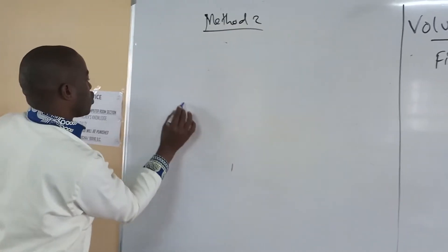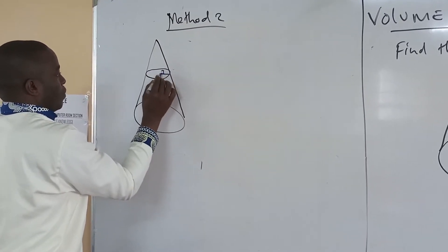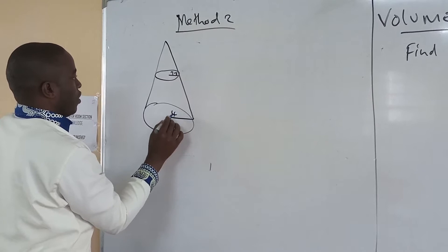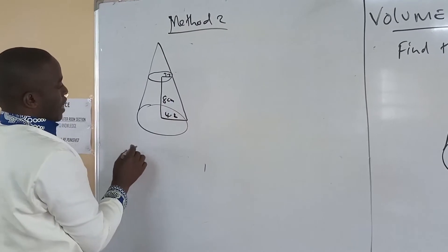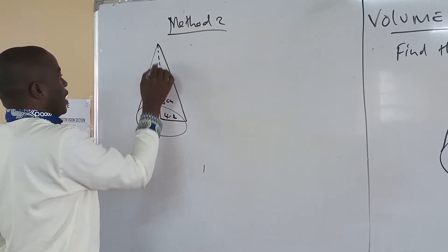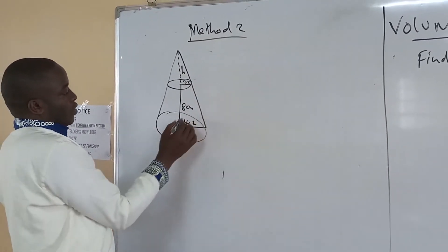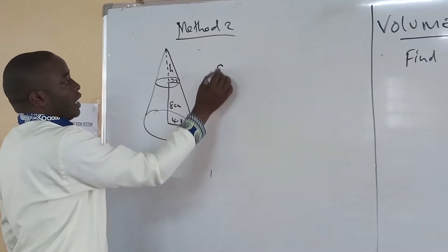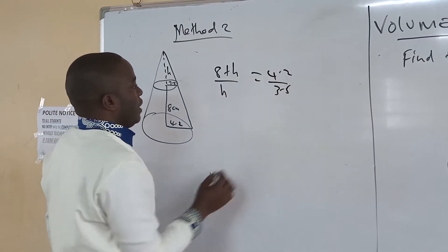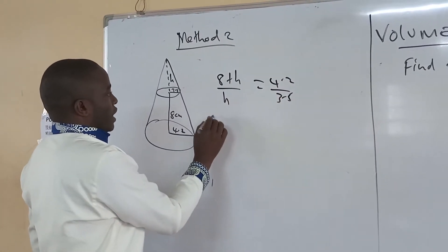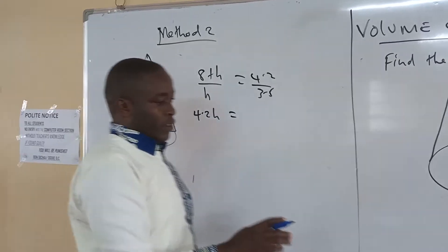In Method 2, we are supposed to draw a full cone with the small radius 3.5 at the top and 4.2 at the base, and here we are told the height is 8 centimeters. Therefore, if I extend the slant side upward to the apex, and call that extra height 'e', we can use similar triangles. That gives us the ratio: e over (H plus e) equals 3.5 over 4.2. Cross-multiplying, we find 4.2·e equals 3.5·(H plus e), which expands to 3.5H plus 3.5e.